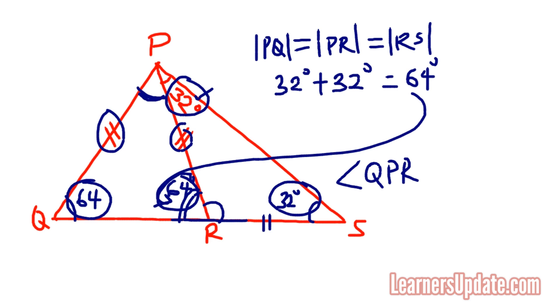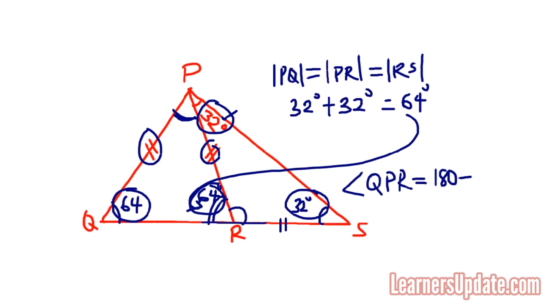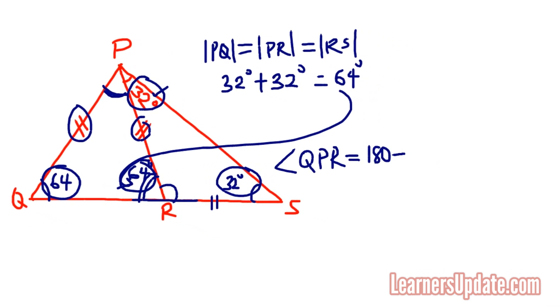180 minus 64 minus 64. So that is 180 degrees minus 128 degrees, and that will give us 52 degrees. So that means the angle we are looking for, QPR, is 52 degrees.